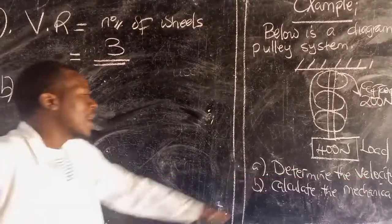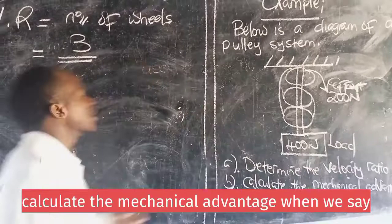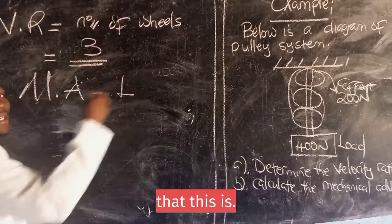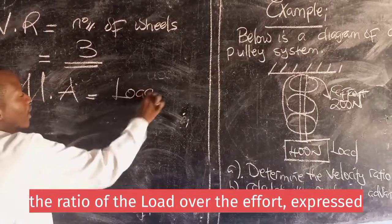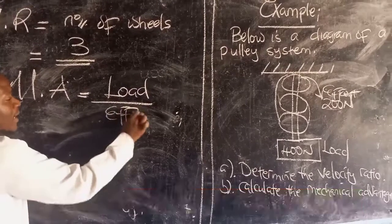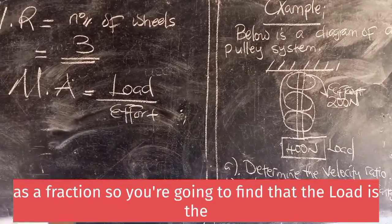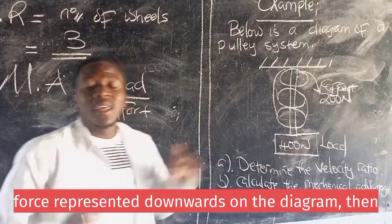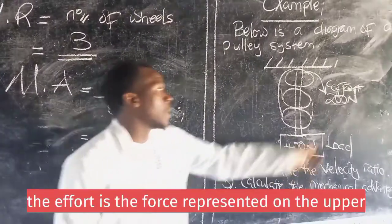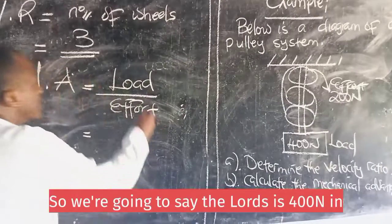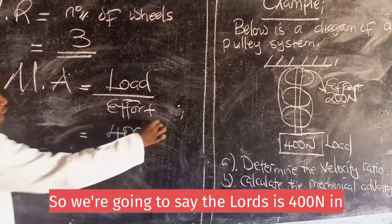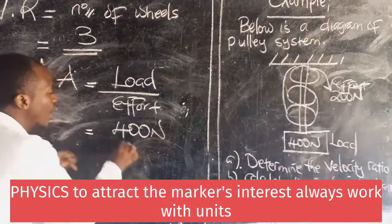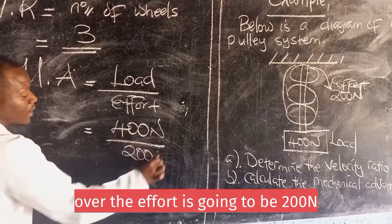Then, B, what we are saying calculates the mechanical advantage. When we say mechanical advantage, we are supposed to understand that this is the ratio of the load over the effort expressed as a fraction. So, I am going to find that the load is the force represented downwards on the diagram. Then, the effort is the force represented on the upper position here. So, I am going to say the load is 400 newtons.